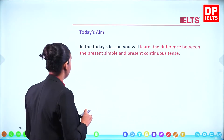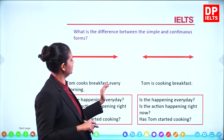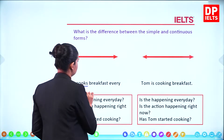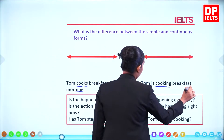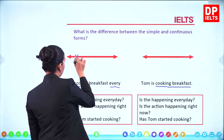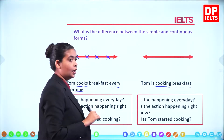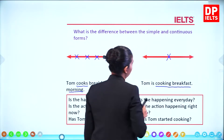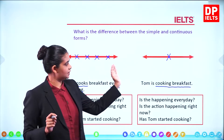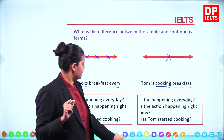So what is the difference between the simple and the continuous forms? Let's have a look. 'Tom cooks breakfast every morning' versus 'Tom is cooking breakfast.' Look at the difference: 'Tom cooks breakfast every morning' - that means every single day Tom cooks breakfast. There's a difference between these two sentences.